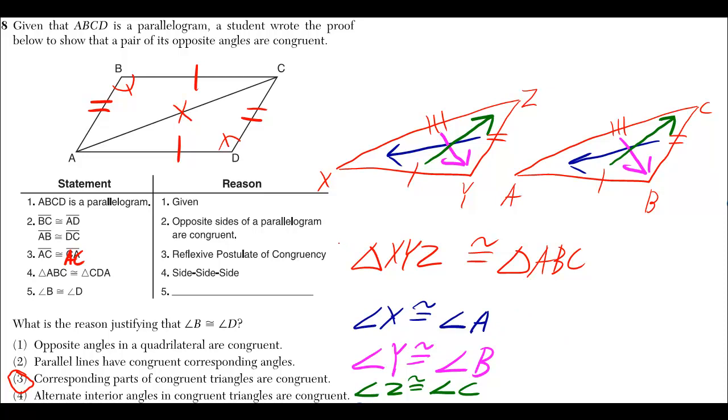So, if for whatever proof I was doing, this over here was given to me, then the reason why all these angle pairs are congruent is because corresponding parts of congruent triangles are congruent.